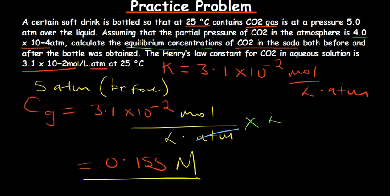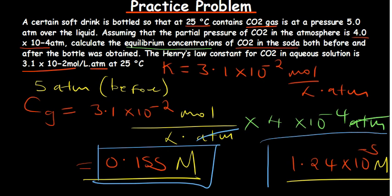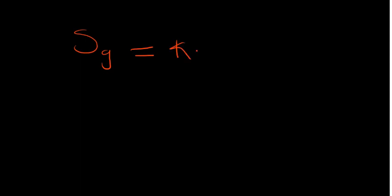After opening, we apply the atmospheric partial pressure of carbon dioxide: cg = 3.1 × 10⁻² × 4 × 10⁻⁴ = 1.24 × 10⁻⁵ mol/L. So inside the bottle with higher partial pressure, the concentration was higher. After opening, the partial pressure of CO₂ in the atmosphere is very low, which leads to much less solubility in the solution. In conclusion, the solubility of a gas is directly proportional to the partial pressure of that gas — that is Henry's Law.